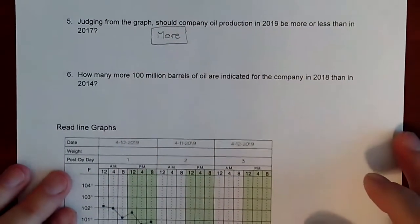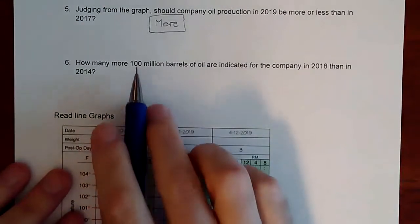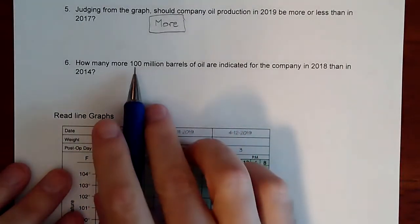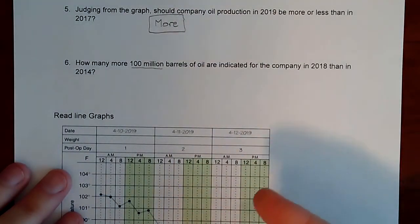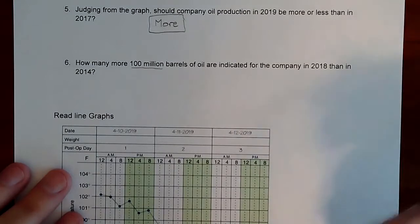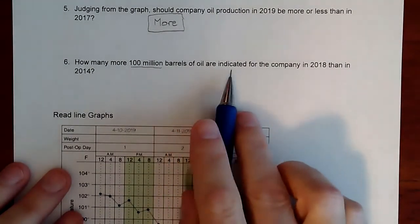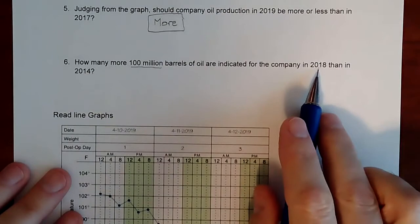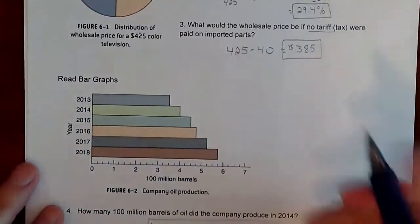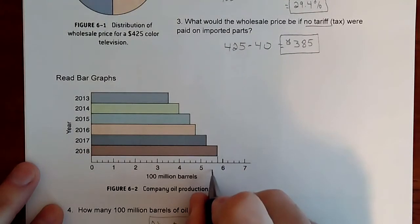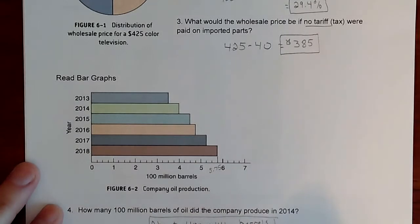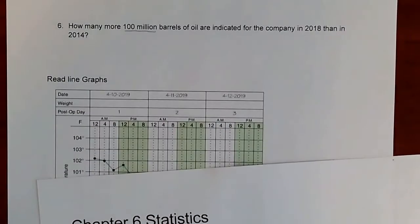How many more 100 million barrels of oil are indicated for the company in 2018 than in 2014? Remember they said 'how many more 100 million,' so whatever we calculate we'll express in 100 million barrels. Looking at 2018 on the graph, that reads at about 5.75.